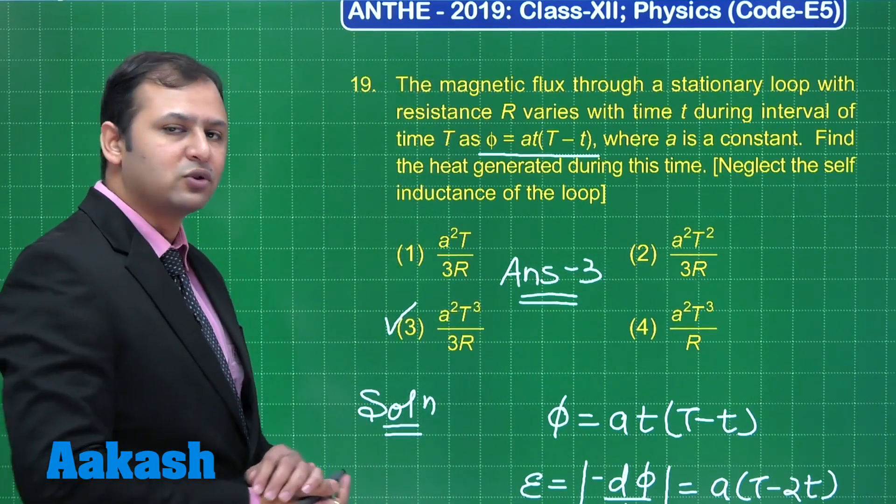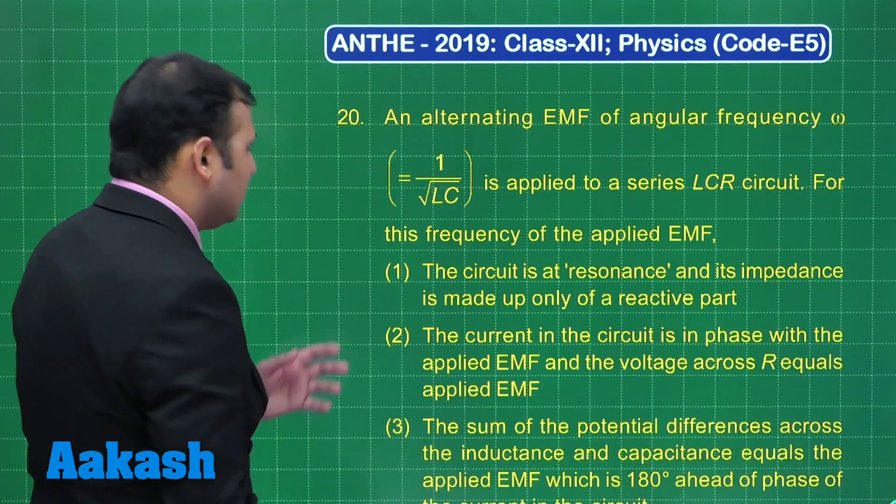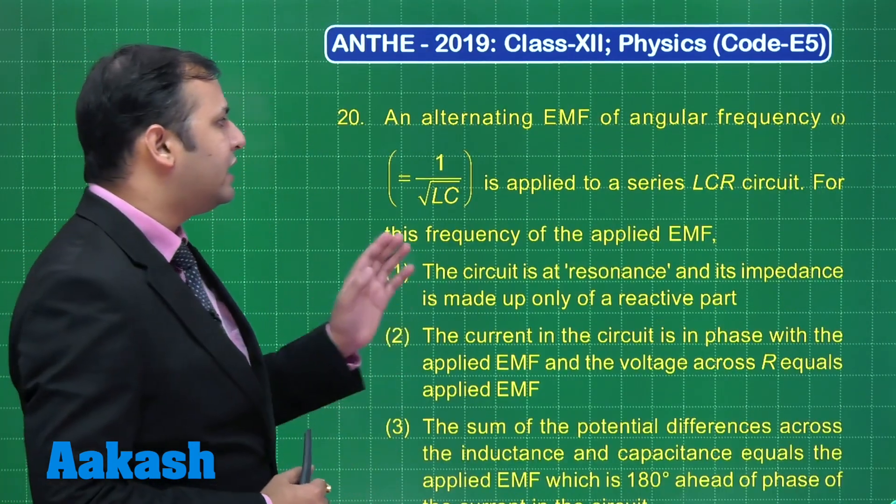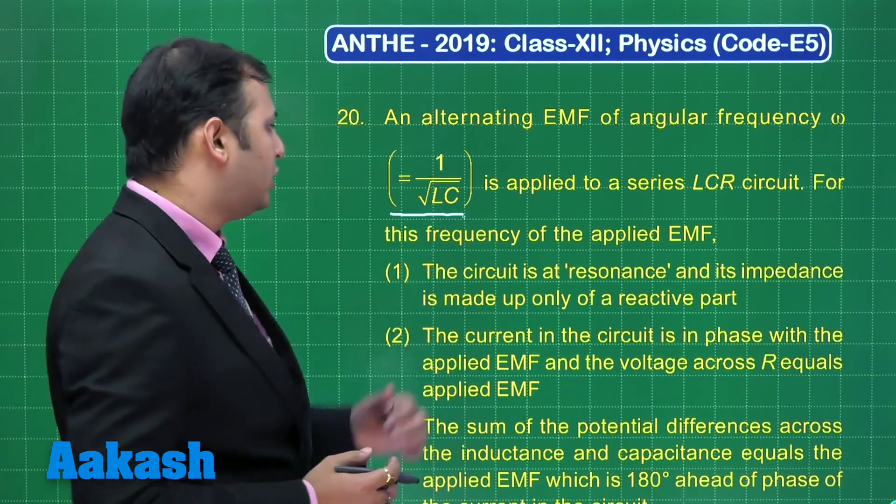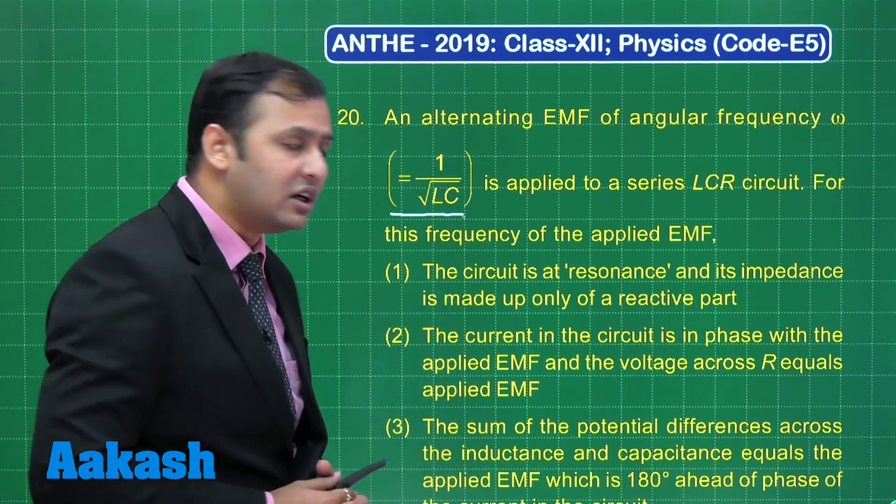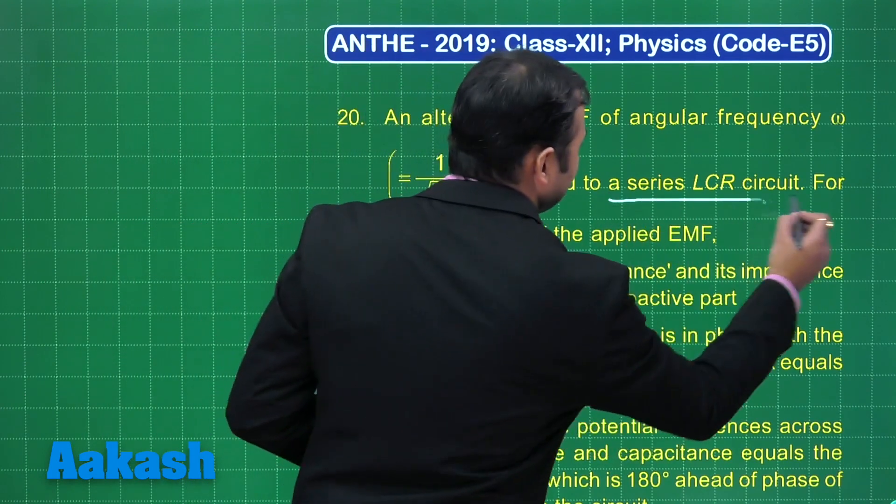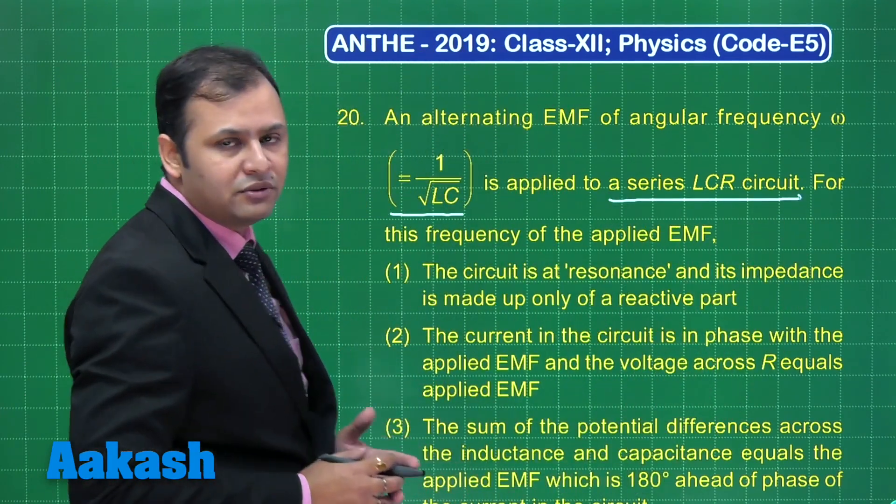Now, let us move on to our next question that is question number 20. In this question, there is an alternating EMF of angular frequency omega which is equals to 1 upon under root LC. So, this is a resonance condition in this series LCR circuit.